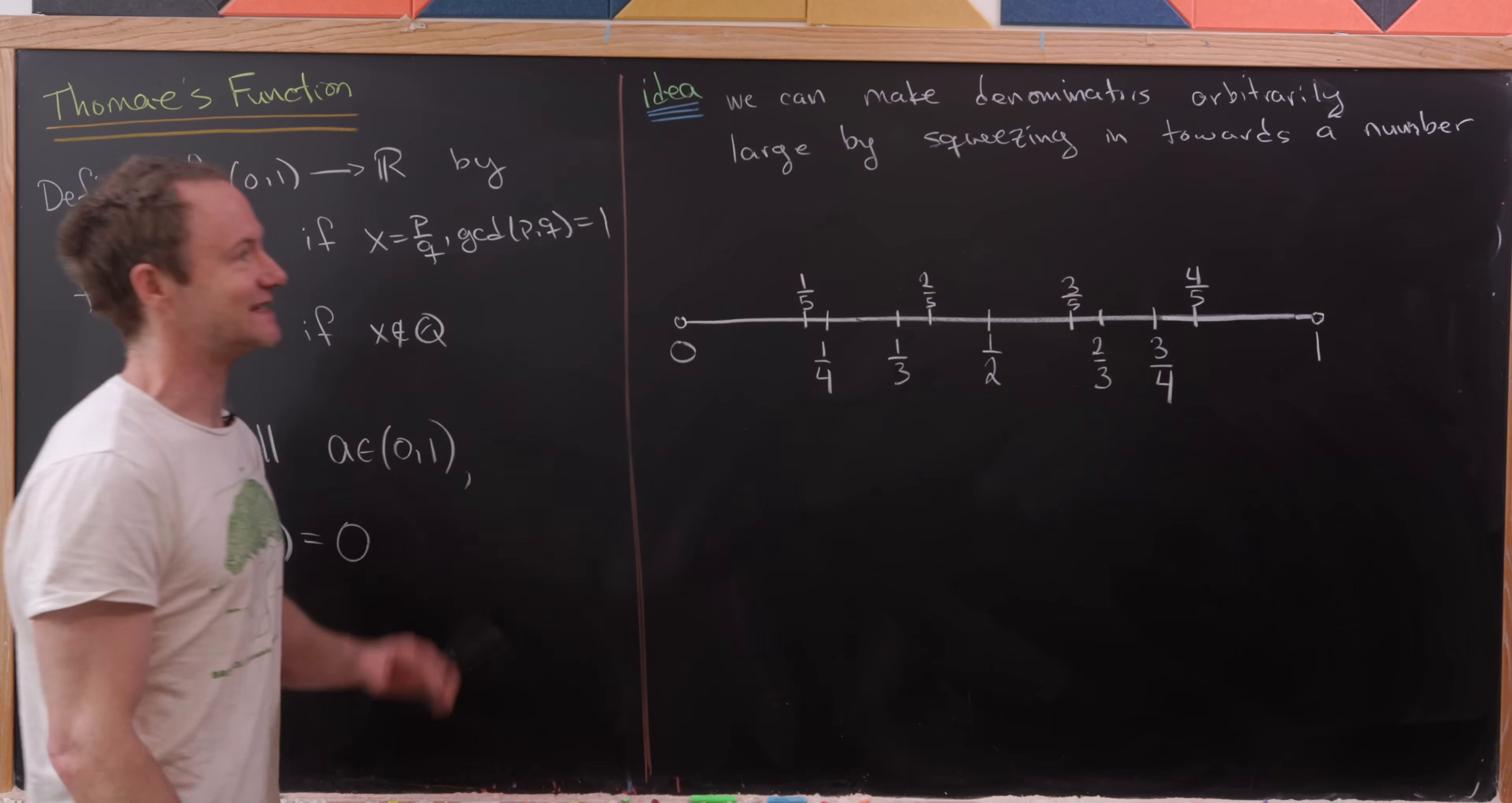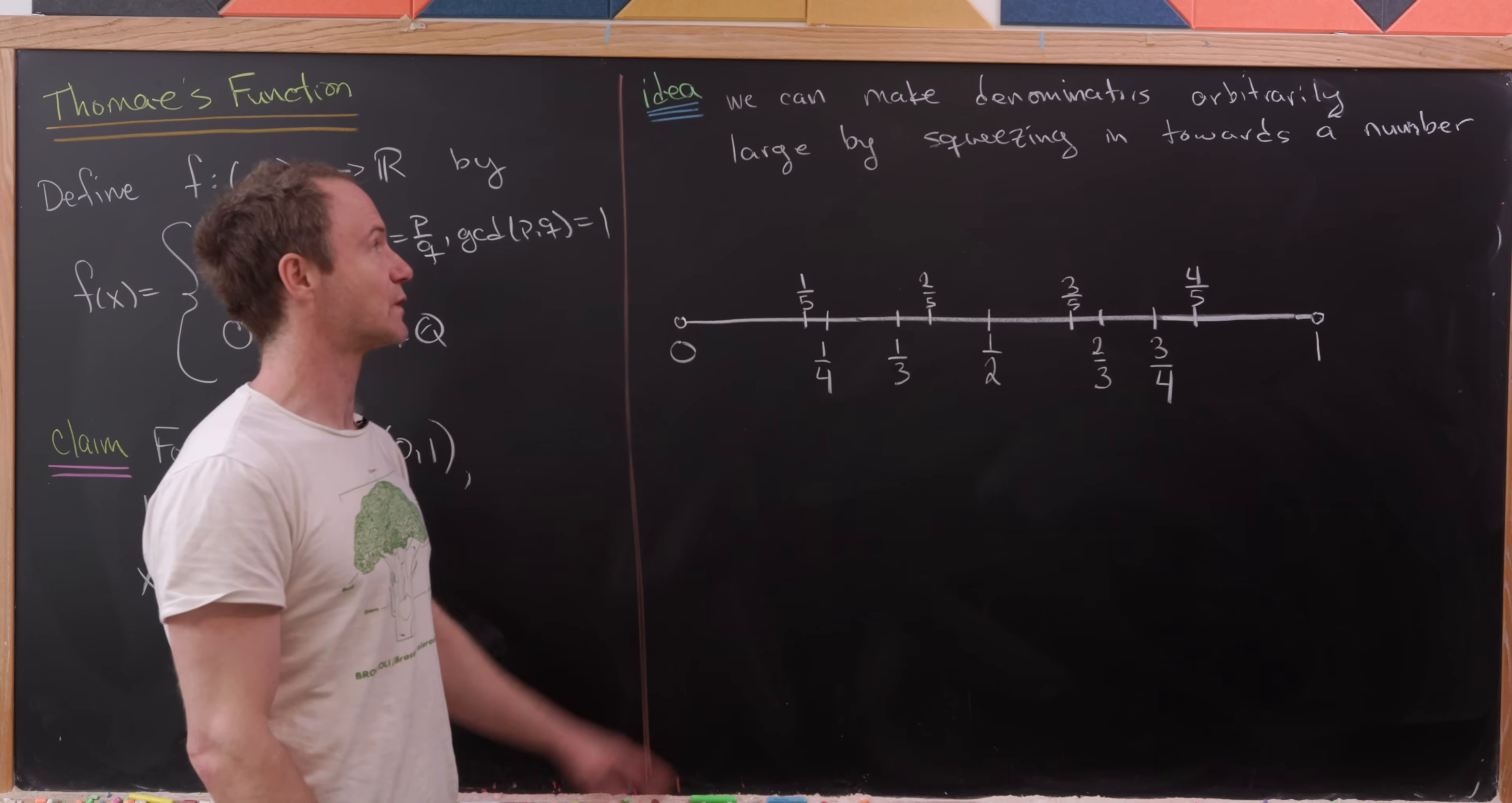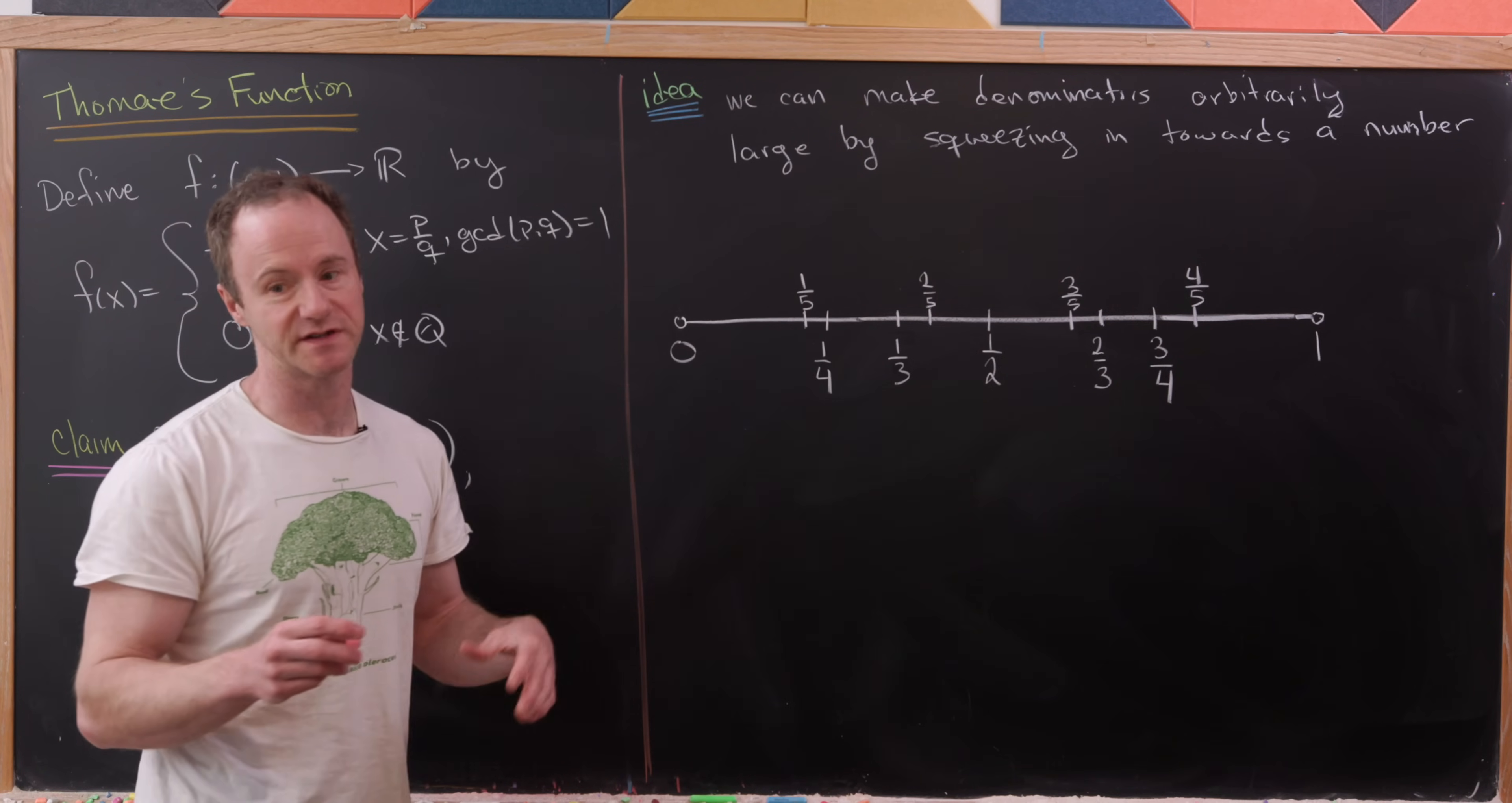Okay, so what's the idea here? Well, I think the idea can be summed up in the following sentence, and we'll draw a picture containing it as well. We can make denominators arbitrarily large by squeezing towards some number.